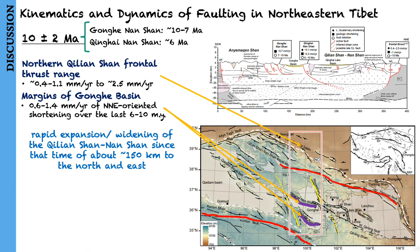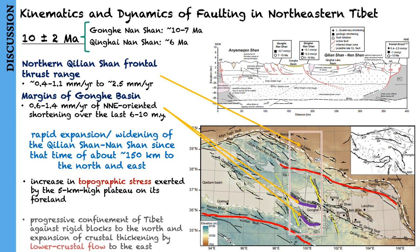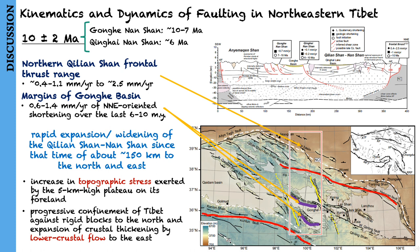First, such a regional episode of mountain building could be associated with an increase in topographic stress exerted by the 5 km high plateau on its foreland, possibly transmitted by the relatively rigid Qaidam Basin. Alternatively, this episode could relate to the onset of regional-scale transpression during the later stages of orogenesis that followed progressive confinement of Tibet against rigid blocks to the north and expansion of crustal thickening by lower crustal flow to the east.